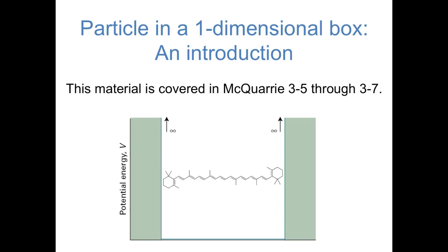Hi, everybody. Moving forward in this course, we'll now start to actually solve the Schrödinger equation for different chemical environments. In the next three videos, we'll be looking specifically at an environment called the particle in a box.